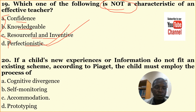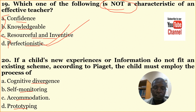Number twenty: If a child's new experience or information does not fit into an existing scheme, according to Piaget the child must employ the process of accommodation. So the correct answer for number 20 is C: accommodation.